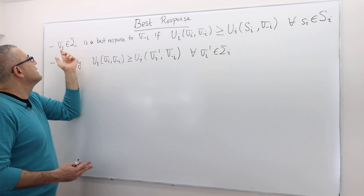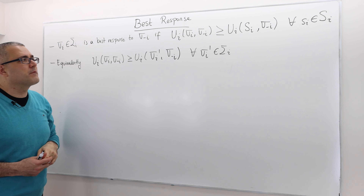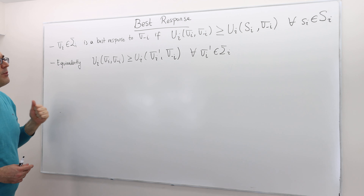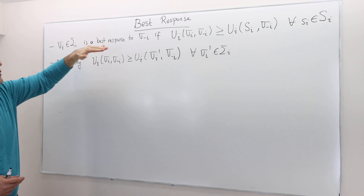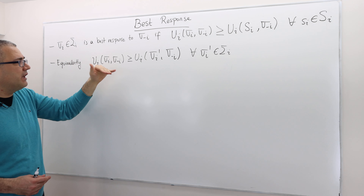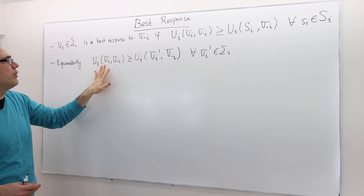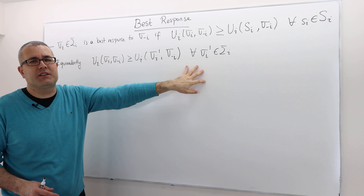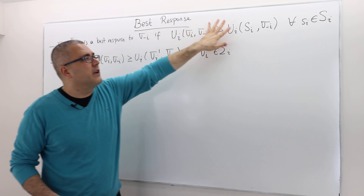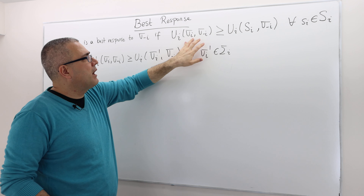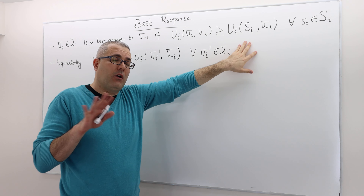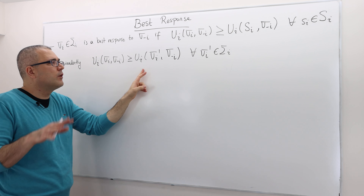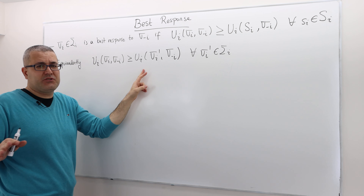If this is the case, then sigma_i is the best response to sigma_{-i}. Equivalently, we can define best response as follows: sigma_i is the best response to sigma_{-i} if the utility of playing sigma_i is at least as good as the utility of playing any other mixed strategy. In the first inequality, we compare sigma_i with all the pure strategies player i has. Here, we're comparing sigma_i with all the mixed strategies he has.